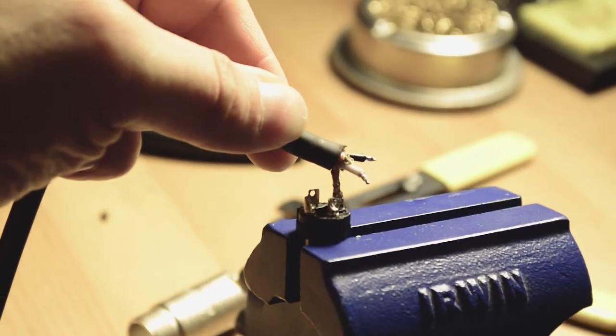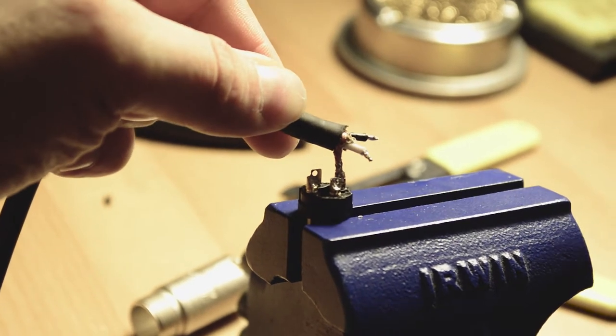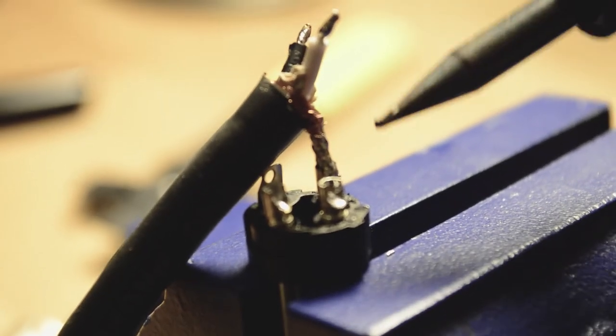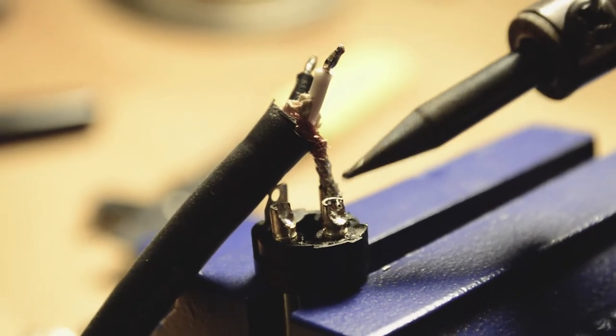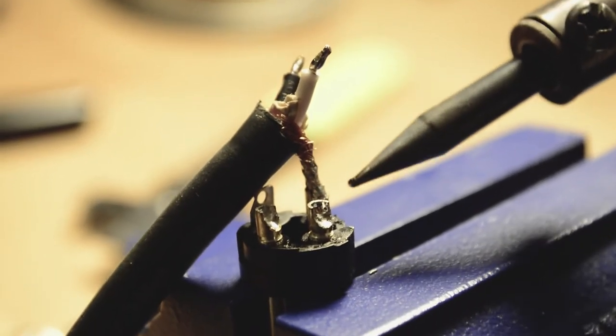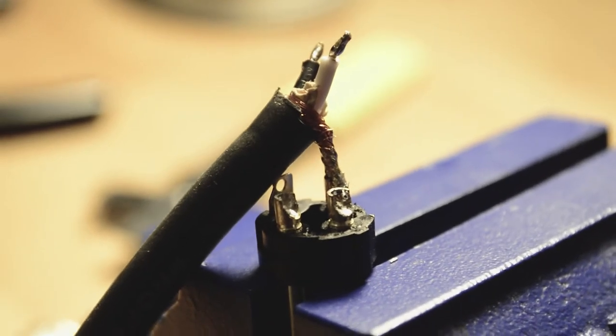See how it kind of slid in? That's how you know you're making a good connection. You want the wire to slide in a little bit. These are actually hollow a certain way in. So you don't want to just put the wire just in this area. You want to make sure that it goes down a little bit. That's how you know you're getting a good seat.